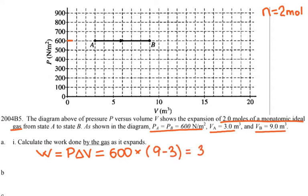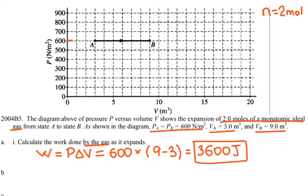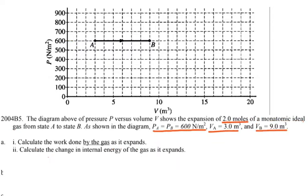The pressure is 600 and the change in volume is 9 minus 3, giving 3600 joules. This is negative work done on the gas because the gas is expanding and losing internal energy. However, it does positive work on the environment by compressing it. Since the question asks for work done by the gas on the environment, the answer is positive 3600 joules.